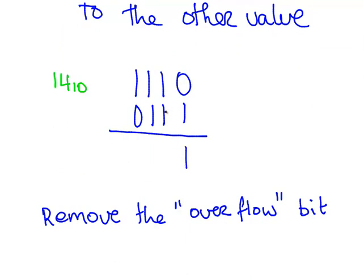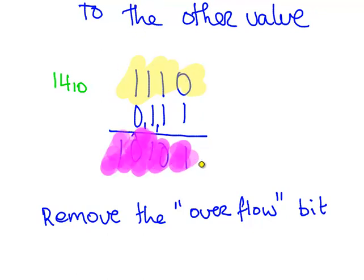1 and 0 gives us 1. 1 and 1 gives us 0, carry the 1. 1 and 1 is 1, carry the 1. 1 and 1 is 0, carry the 1. Now, we were dealing with 4-bit numbers here — 14 was a 4-bit number and 9 was a 4-bit number. But what we've ended up with is a 5-bit number. There's a thing here called the overflow bit — it's an excess bit. So what we do is just disregard it or remove it.